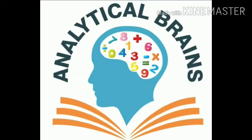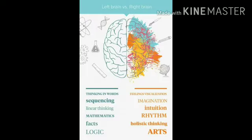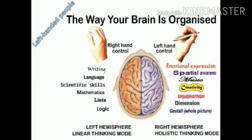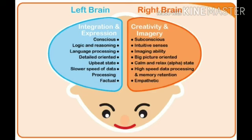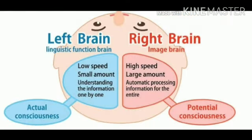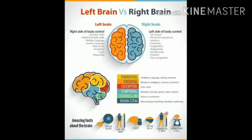The right brain controls the left side of the body and the left brain controls the right side of the body. So brain development is skewed to whether a person is predominantly left-handed or right-handed. The right brain is the creative or emotional hemisphere, and the left brain is the analytical or judgmental hemisphere. Vedic Mathematics does both types of simulations simultaneously.